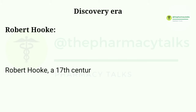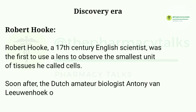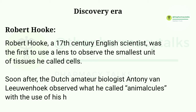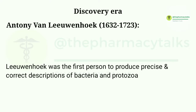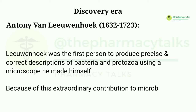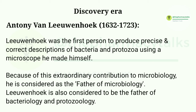Robert Hooke, a 17th century English scientist, was the first to use a lens to observe the smallest unit of tissues he called cells. The Dutch amateur biologist Antony van Leeuwenhoek observed what he called animalcules with the use of his homemade microscopes. Leeuwenhoek was the first person to produce precise and correct descriptions of bacteria and protozoa using a microscope he made himself. Because of this extraordinary contribution to microbiology, he is considered as the father of microbiology.